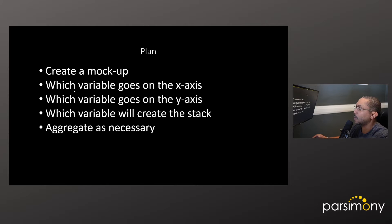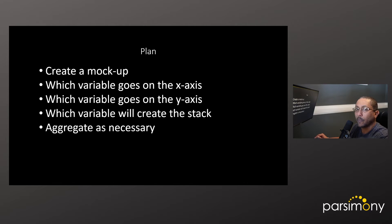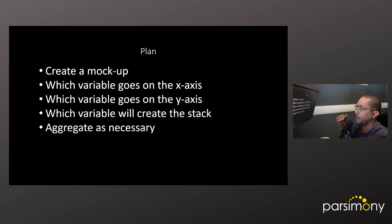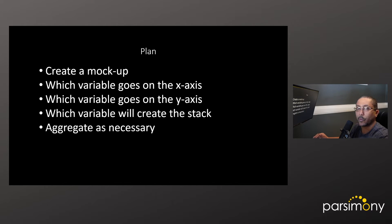The next step is to think about what variable will go on the x-axis — that's the horizontal axis of the chart — and what variable will go on the y-axis. I also like to think about what variable will be used to create the stack, which is typically the variable that specifies the different colors. So if a variable has five levels, you'd have up to five colors in a particular bar, and that gives you a good idea of how you need to aggregate the data so it'll be ready for creating that chart.